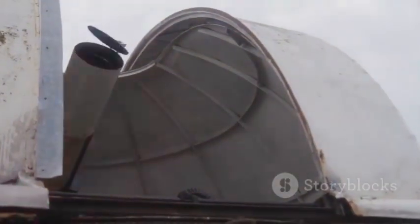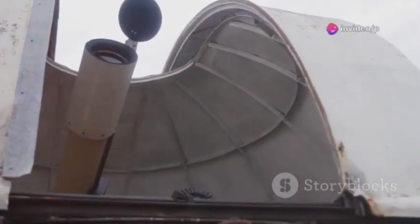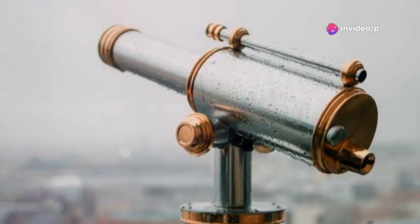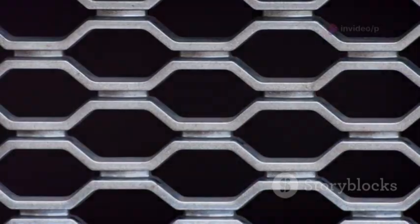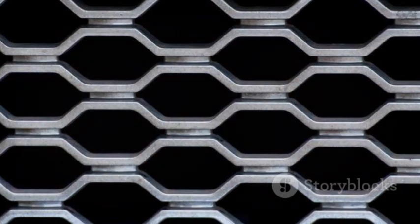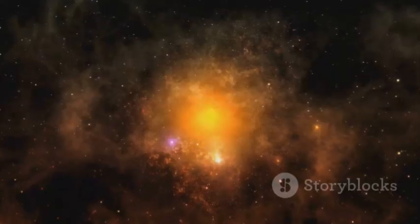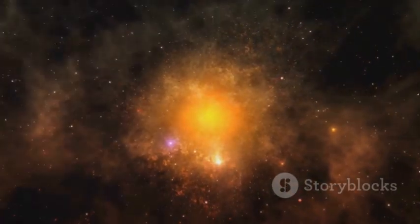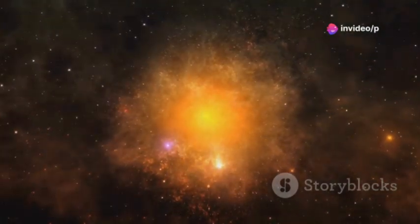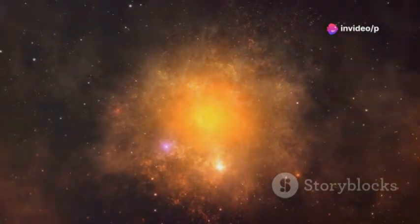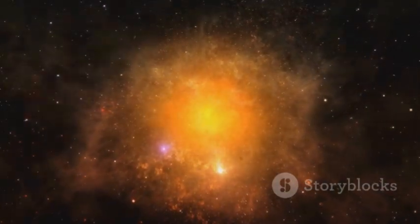Webb's giant golden mirror is a marvel in itself, over 21 feet across, made up of 18 precisely engineered hexagonal segments, each coated in a thin layer of gold to maximize the reflection of infrared light. This enormous mirror collects the faintest, most ancient light, photons that have traveled for more than 13 billion years across the vastness of space, carrying secrets from the dawn of time.